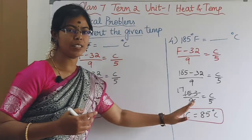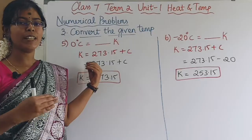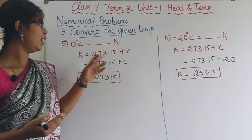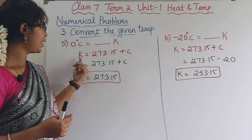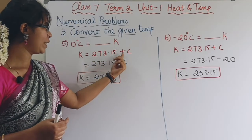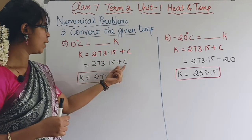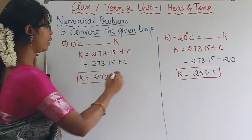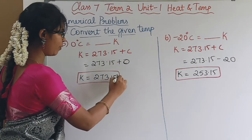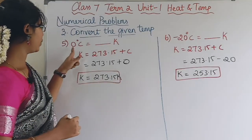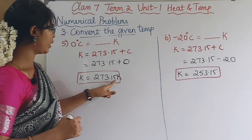Now we convert between Celsius and Kelvin. The formula is K = 273.15 + C. For 0 degrees Celsius: K = 273.15 + 0 = 273.15 K. So 0 degrees Celsius equals 273.15 K.